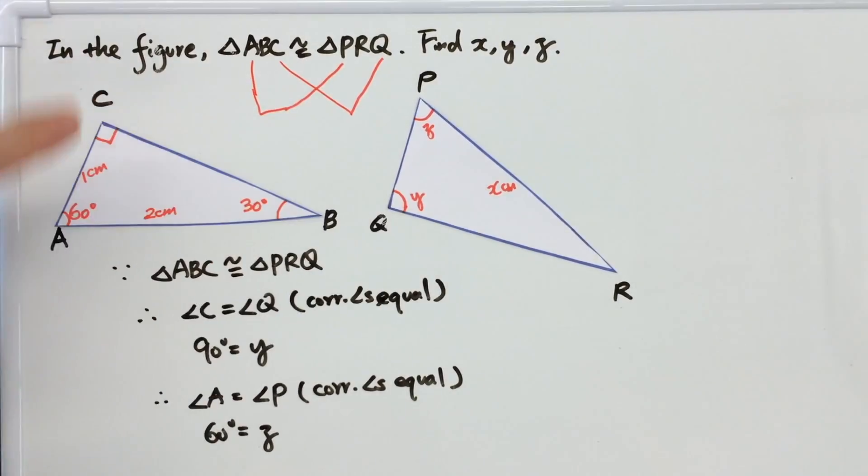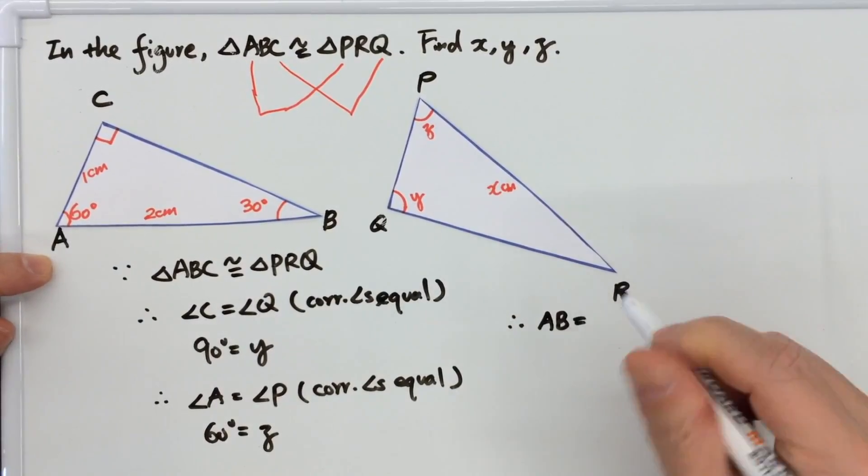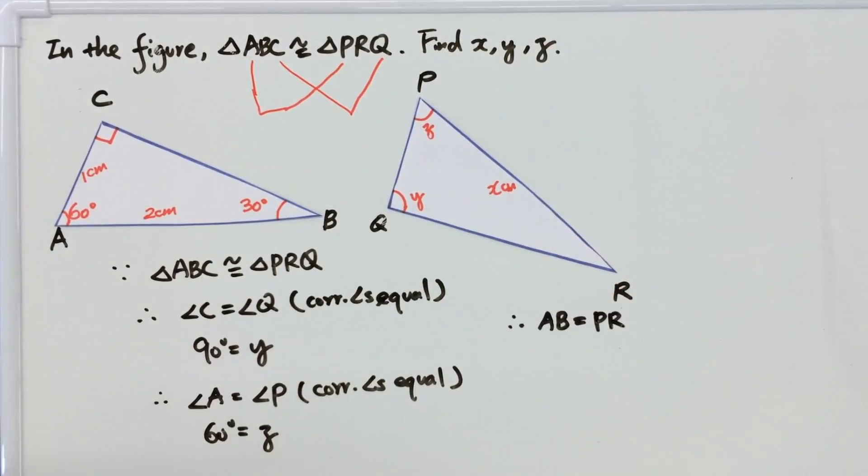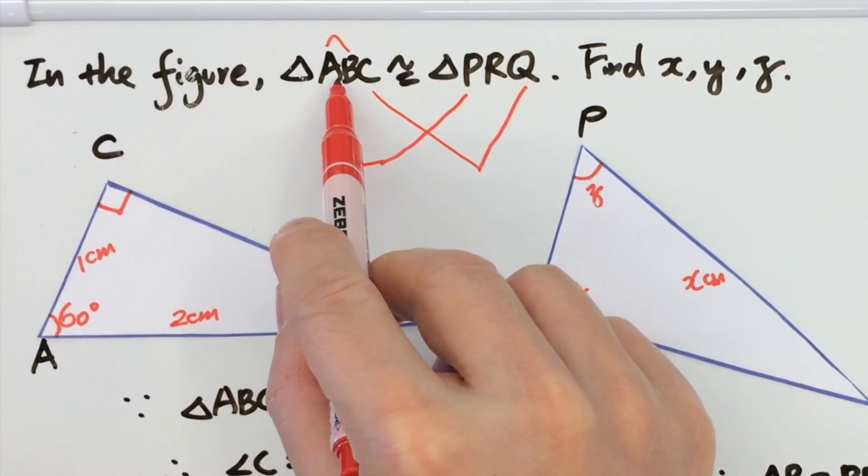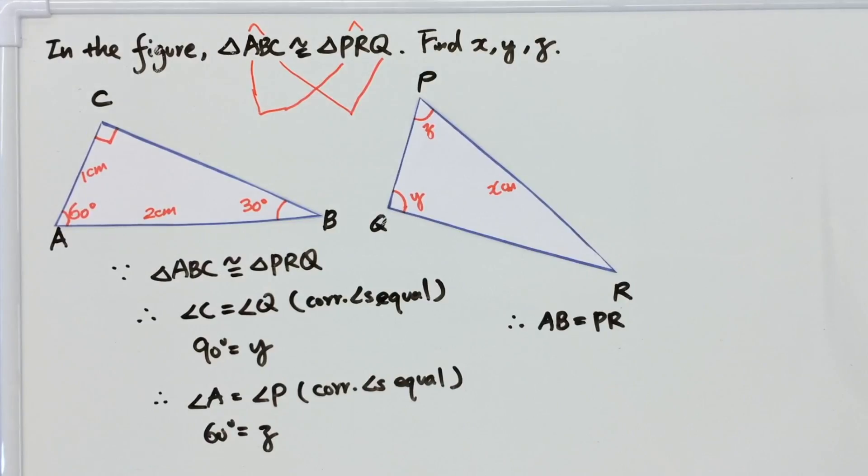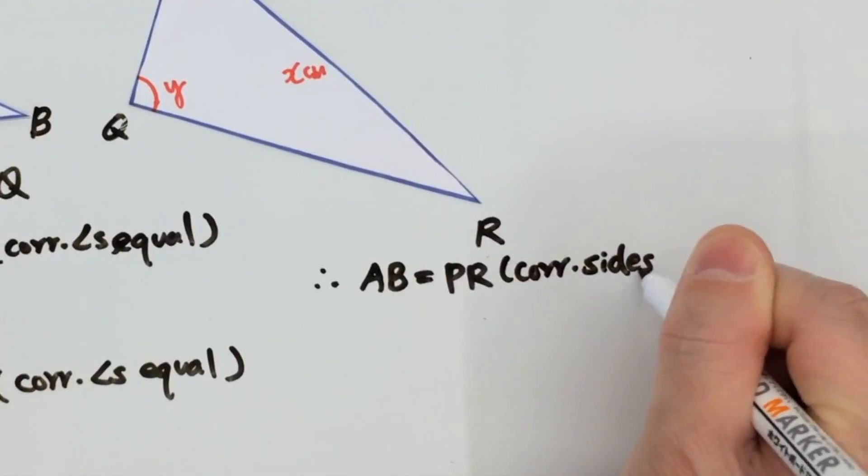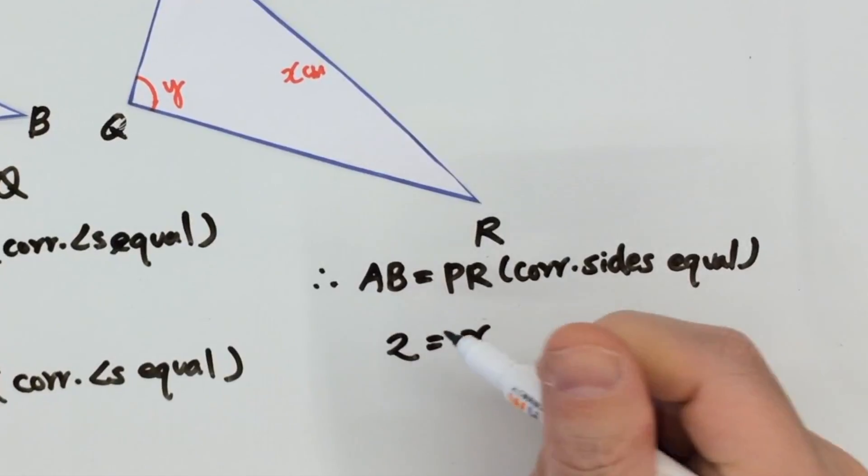Finally, we need to find x. x will be corresponding to 2 cm. Therefore, AB equals to PR. You can also tell from the given condition. This is AB. Side AB equals to side PR. The reason is corresponding sides are equal. Therefore, PR will be x and AB will be 2.